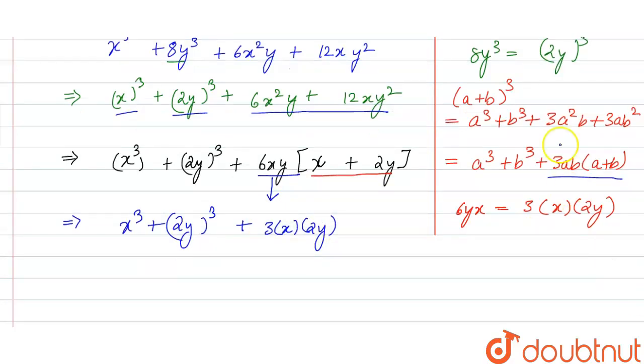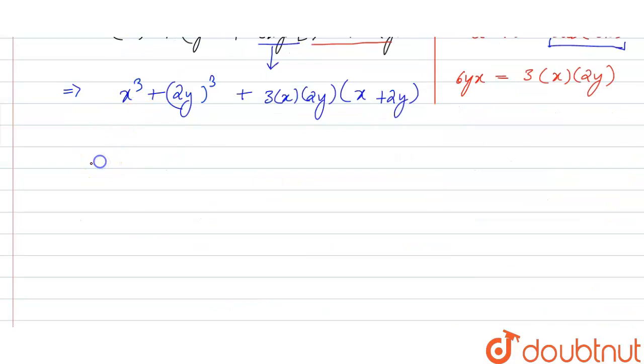We have just created the term of 3ab into a plus b which is equal to 3x into 2y into x plus 2y. So if we see this term, this is the expansion for x plus 2y whole cube. So after factorization this will be the final answer.